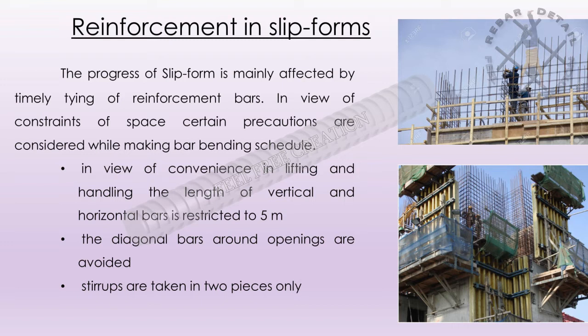In view of constraints of space, certain precautions are considered while making the bar bending schedule. Point 1: in view of convenience in lifting and handling, the length of vertical and horizontal bars is restricted to 3 meters or 4 meters etc. Point 2: diagonal bars around openings are avoided. Point 3: stirrups are taken in two pieces only.